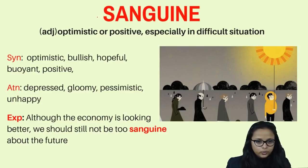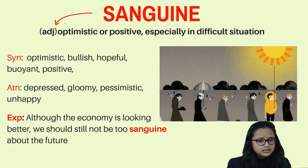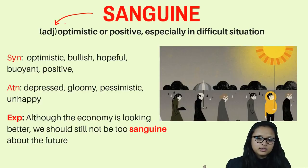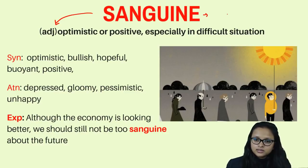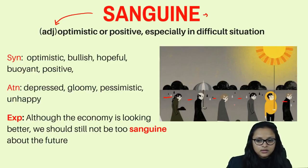The next word is sanguine. Sanguine is an adjective representing the quality of being optimistic or positive in difficult situations. For example, the weather has been extremely bad for four to five days, yet a person still believes the sun is going to rise — that is optimistic behavior even in difficult situations.